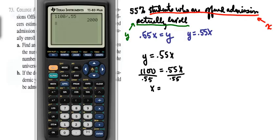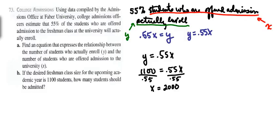So that means we want to offer admission to 2,000 students, and then we will have 1,100 according to this model of calculating. We will have 1,100 students actually enroll. Okay, so that is the end of problem number 73.